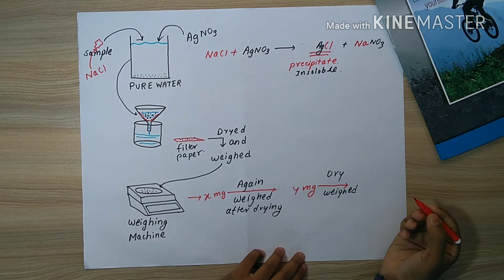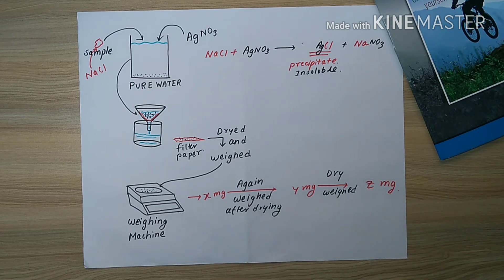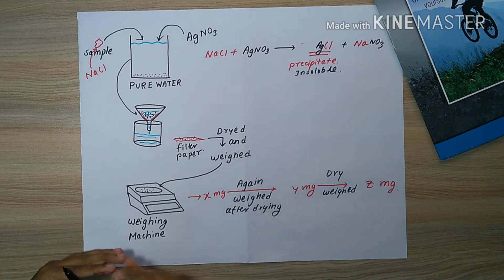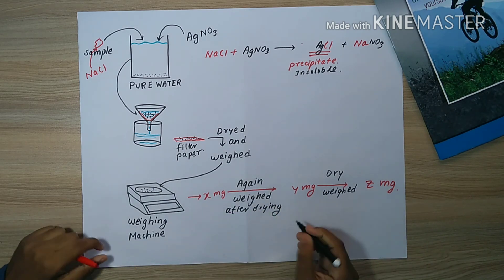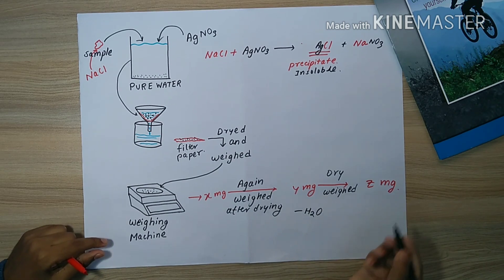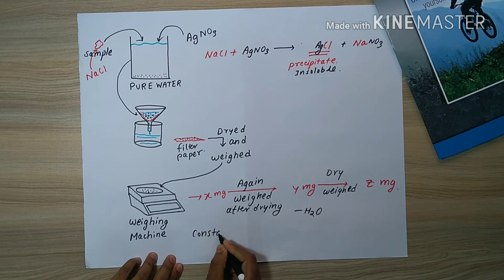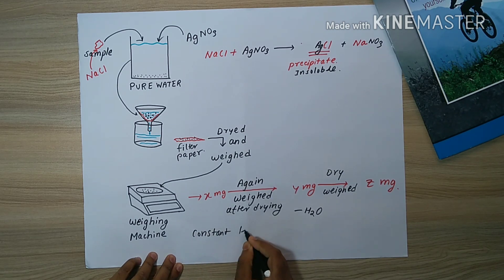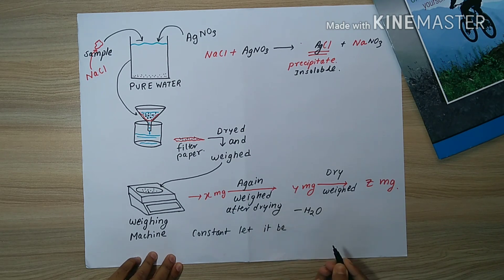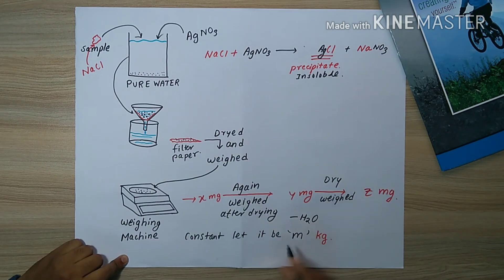Now it has decreased to z milligrams. This decrease in weight gradually after drying and weighing again and again is due to the reduction of H2O by losing the moisture from the precipitate. We do it until the precipitate attains a constant weight. This constant weight when achieved, suppose it to be m milligrams.